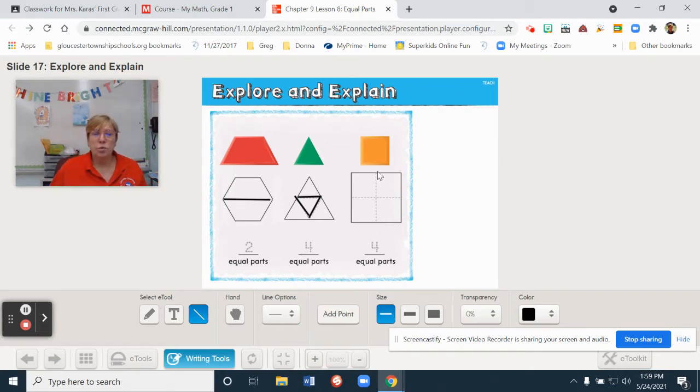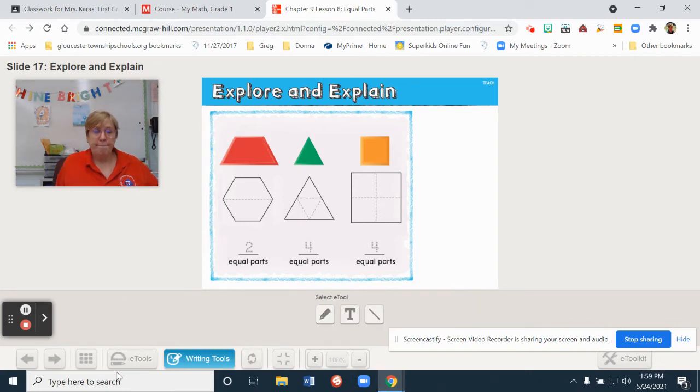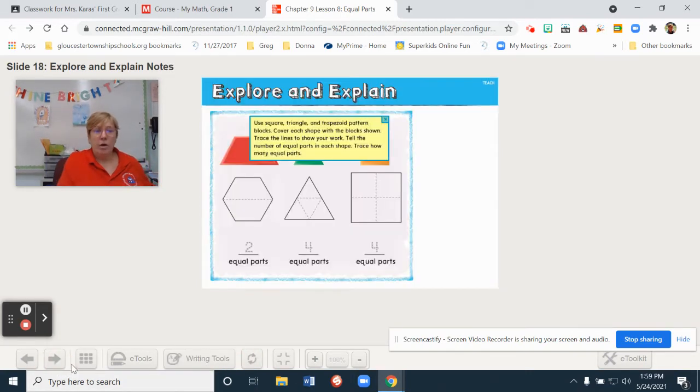And once again, for a square, same thing. Now, they're doing it this way. As we talked about before, you can do it the other way as well. And color that orange. So, you can pause this to complete this page. And then go to the next page when you return.